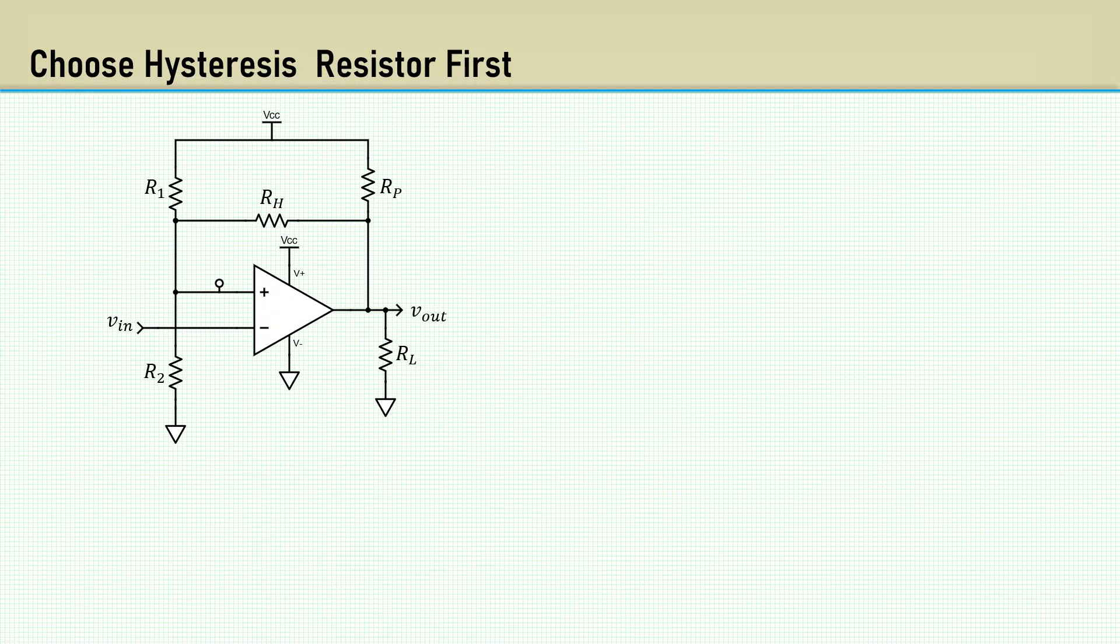Before we can consider the current in RH, we must recognize there will be two different voltages across RH depending on the output state of the comparator. When the output sinks to ground, the threshold voltage VL is at its lowest state. When the output opens, RH is pulled up by the pull-up resistor and the threshold voltage VH is now at its highest state. If we were to design current in RH relative to the maximum voltage across it, when in the other state, the voltage across RH would be lower, the current would be lower as well. We must establish which is the lower voltage across RH.